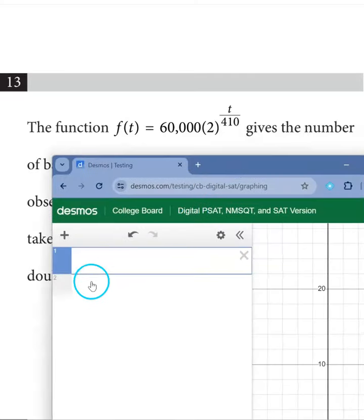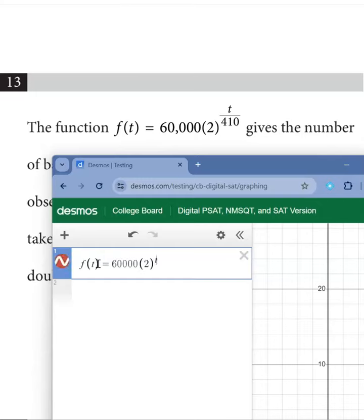In your calculator, type your function. Do not type the comma in the number. Shift 6 will make an exponent. T divided by 410 will make the fraction.